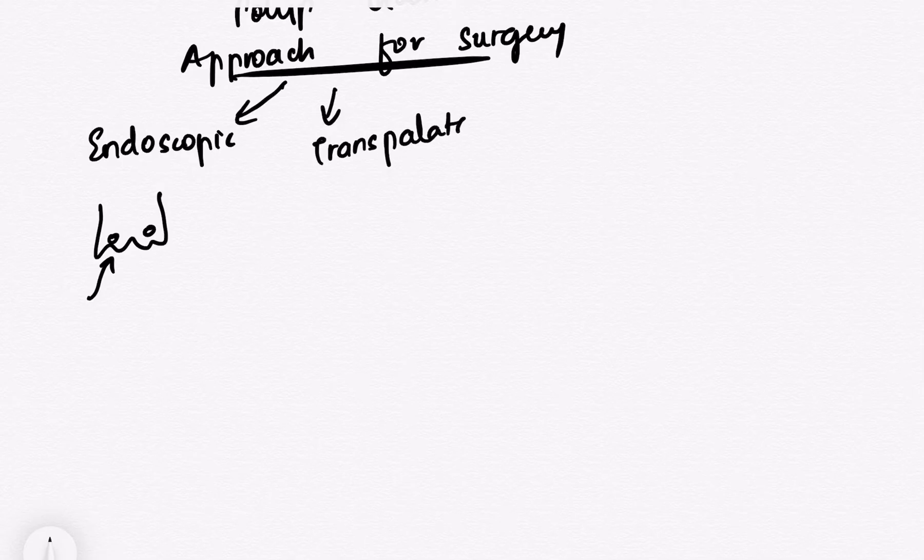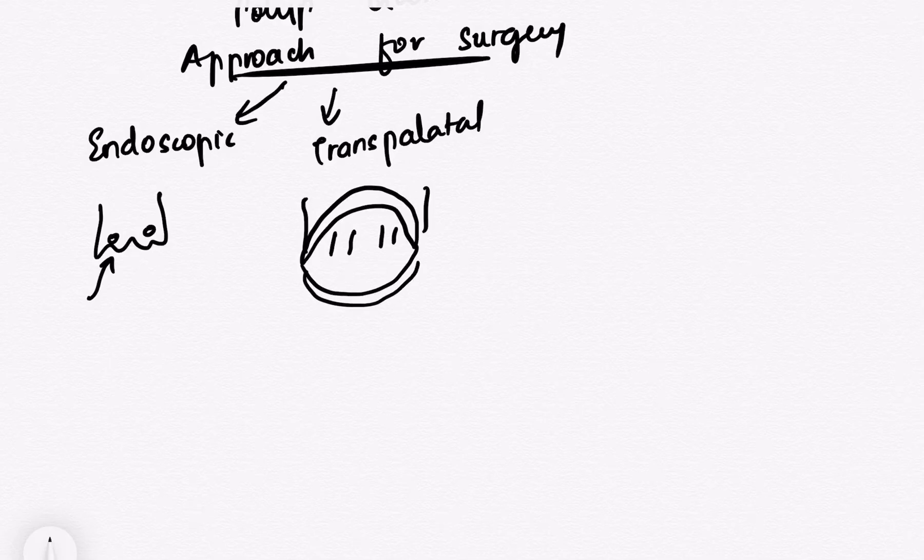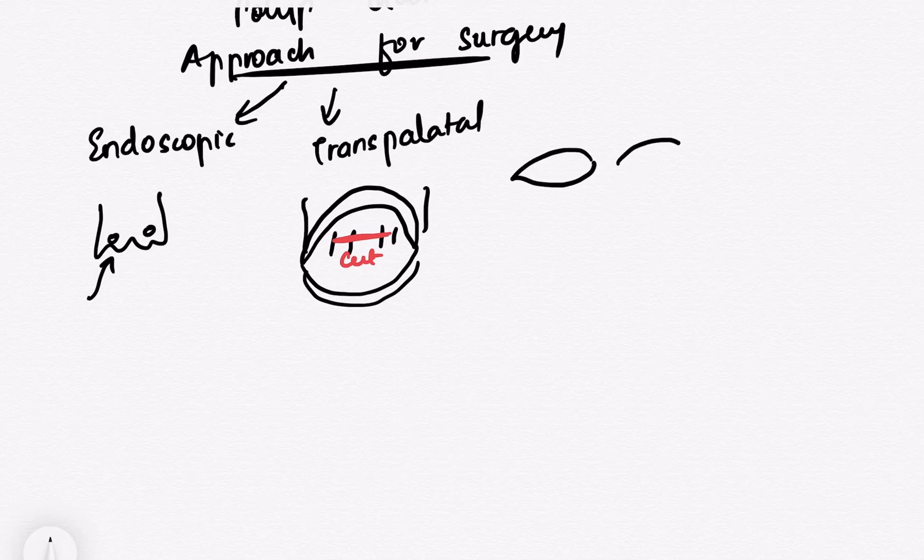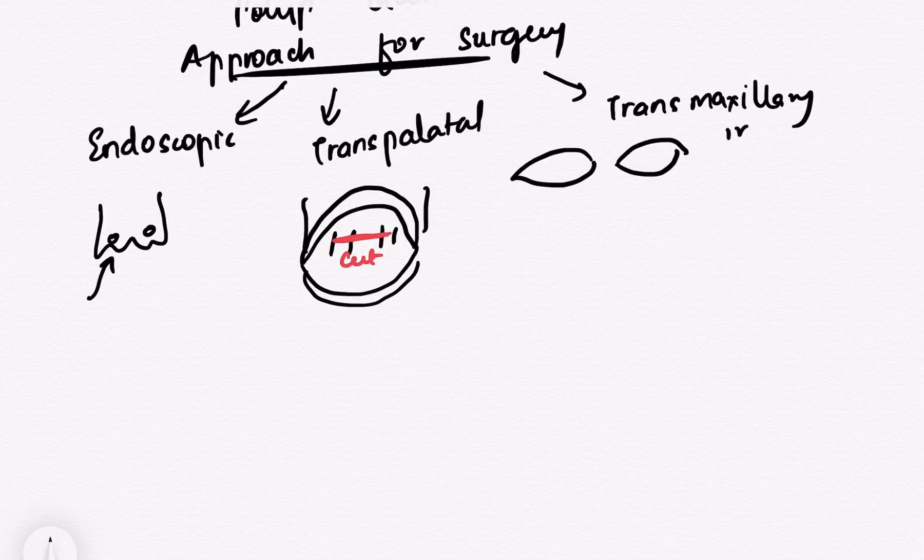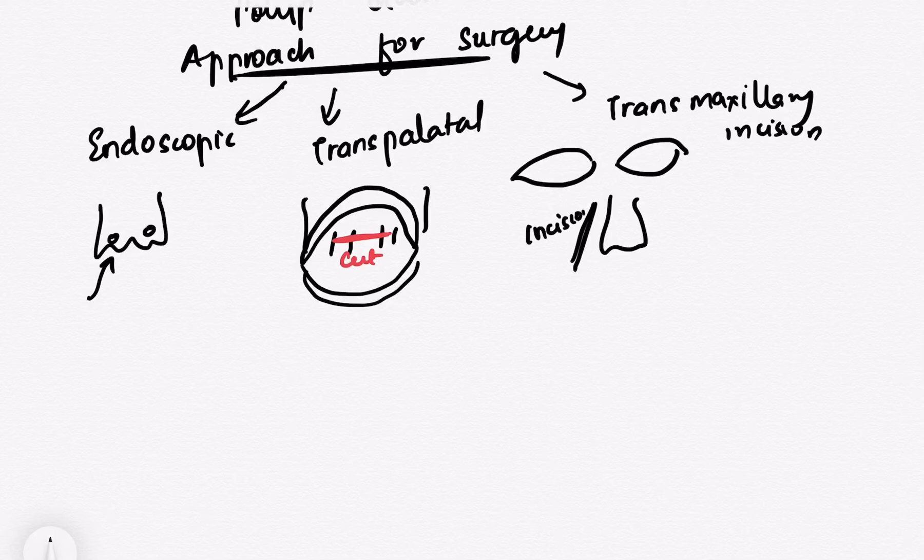Now, basically there are various approaches to excise the tumor. Transpalatal approach is when we cut the hard palate to enter the nasal cavity. The transmaxillary incision in the nasal facial skin is when you give an incision just on the sides of the nose. You raise the skin flap and when you know that on the sides of the nose, you have the maxillary sinus. So via the maxillary sinus, you will approach the tumor.